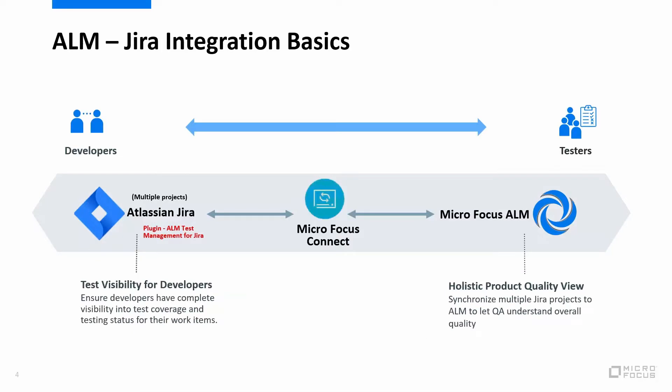The basic way to integrate ALM Quality Center with Jira is to use a synchronization tool called Micro Focus Connect. It allows integrating multiple Jira projects with ALM so that the QA team gets a holistic quality view across projects.